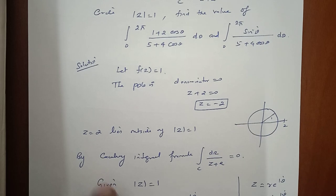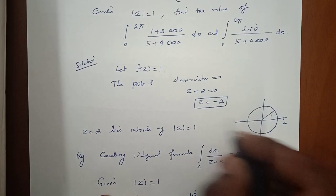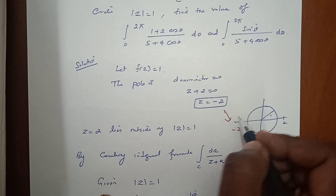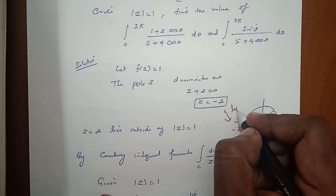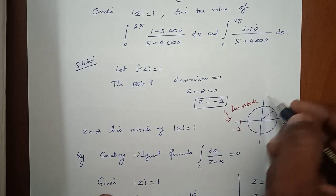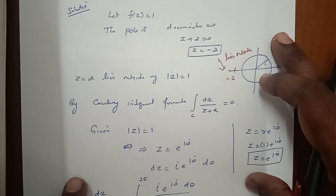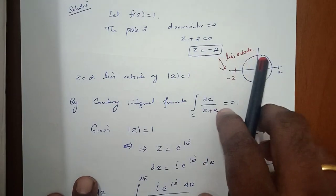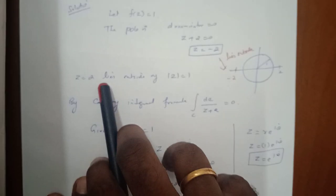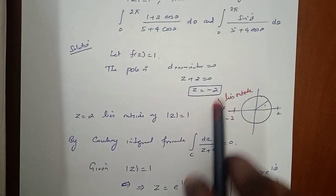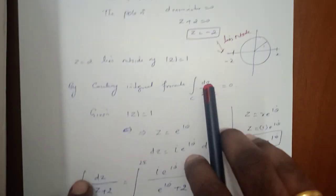The pole z = −2 lies outside the circle. Since the pole is outside the closed curve, the integral is equal to 0. If the pole were inside, we would compute the integration using the Cauchy integral formula. But since z = −2 lies outside the circle, the integral over the closed curve of dz/(z + 2) is equal to 0.